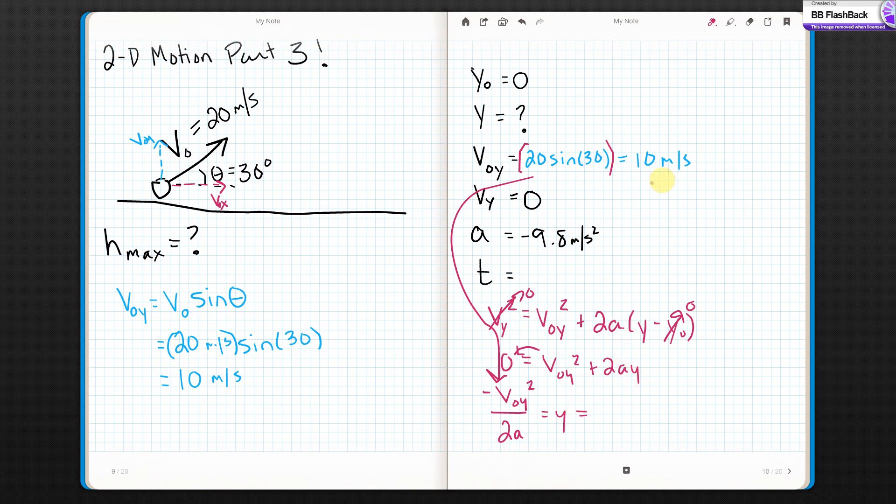But, since it comes out nicely, I'm just going to use it for this one. So, I'm going to get negative 10 squared over 2 times negative 9.8. If I put all that in a calculator, I get 5.1 meters.